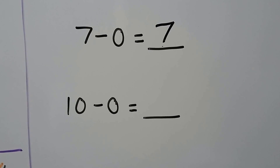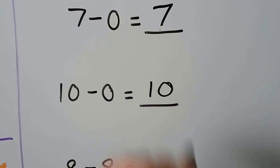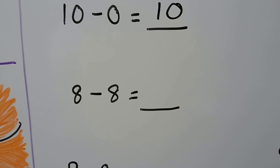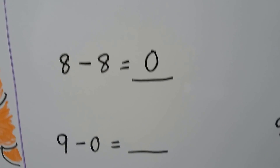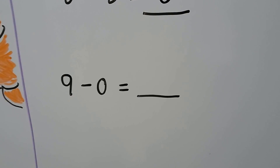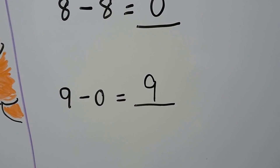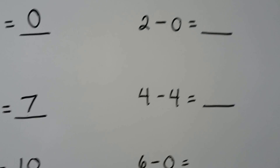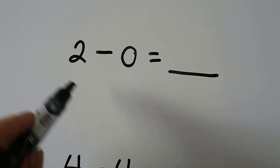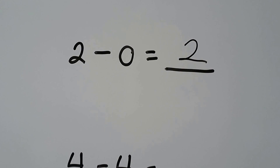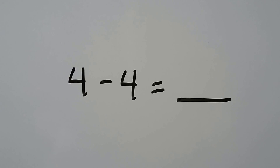Ten minus zero — we're subtracting zero, so ten stays the same. Eight minus eight — when we subtract all, zero are left. Nine minus zero — the number stays the same, it stays nine. Two minus zero — the number stays the same, we have two. Four minus four — when we subtract all, zero are left.